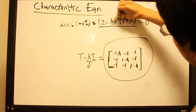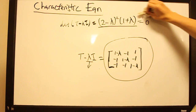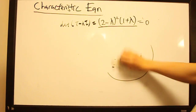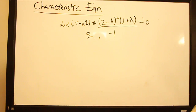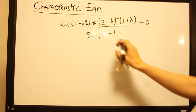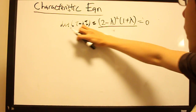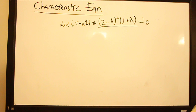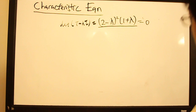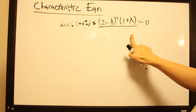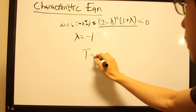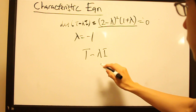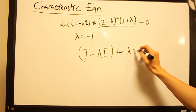Now that we know the characteristic polynomial, it's easy to see that the eigenvalues of t are 2 and minus 1. Once we know the eigenvalues, we can proceed to find eigenvectors corresponding to each. Let's find the eigenvector for lambda equals minus 1 by computing t minus lambda i for that value.